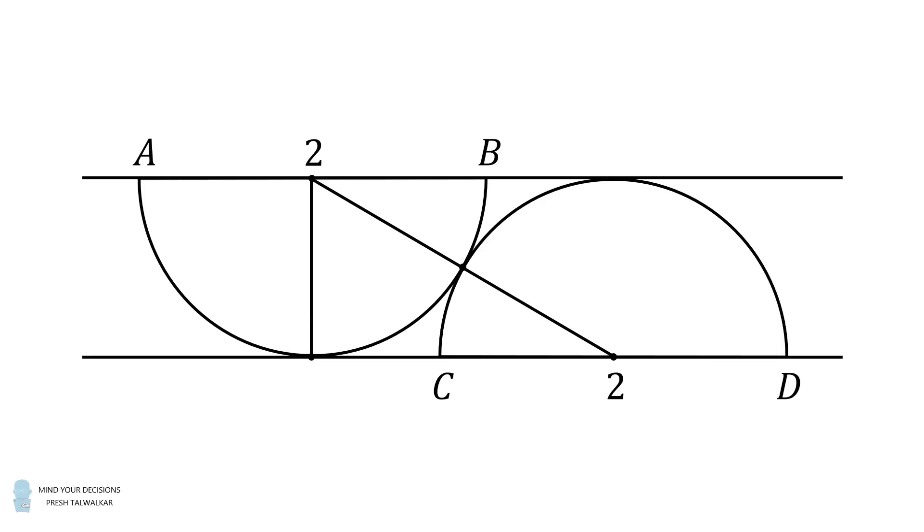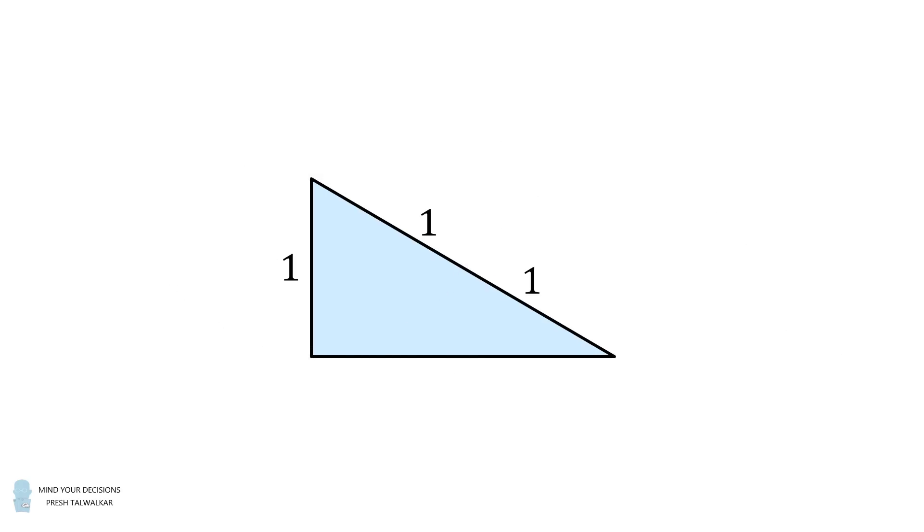Now, each semicircle has a diameter that's equal to 2, which is equal to 1 plus 1. So each semicircle has a radius that's equal to 1. So let's focus on this right triangle. The shorter leg will be equal to 1, so the hypotenuse will be equal to 1 plus 1. So the hypotenuse will be equal to 2. We thus have a 30-60-90 special right triangle. So we know that the longer leg will be equal to the square root of 3.